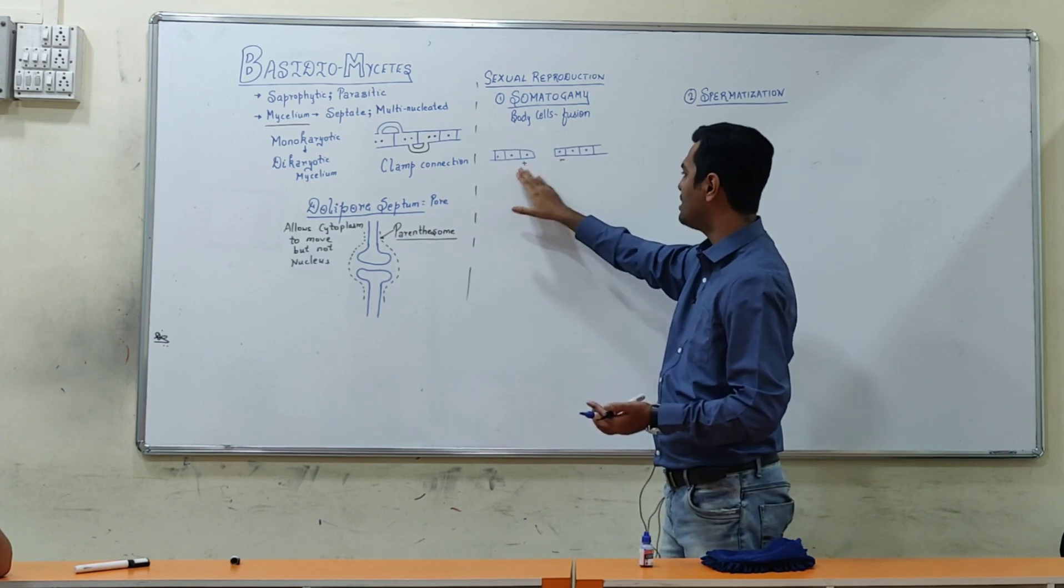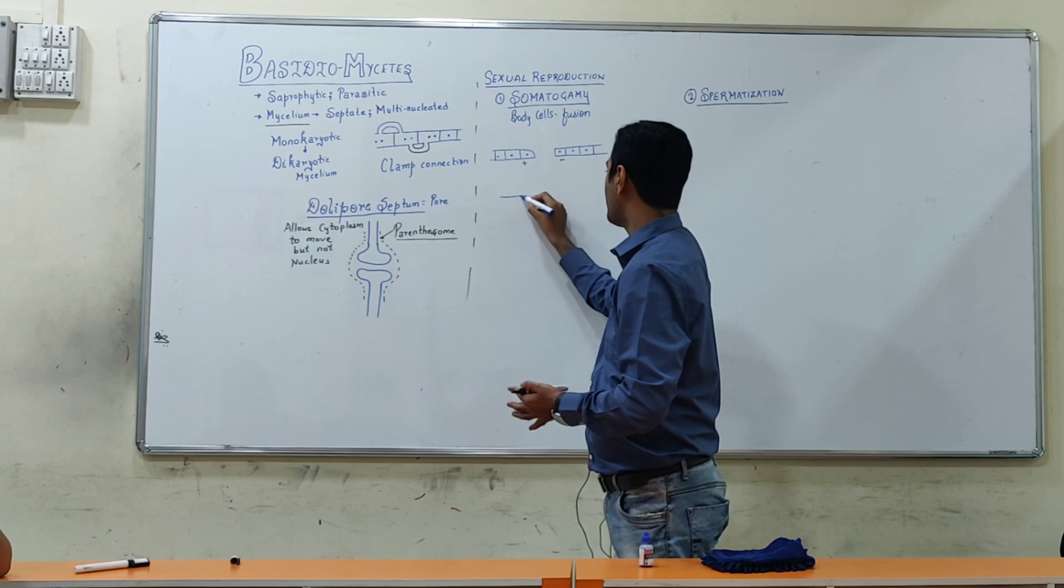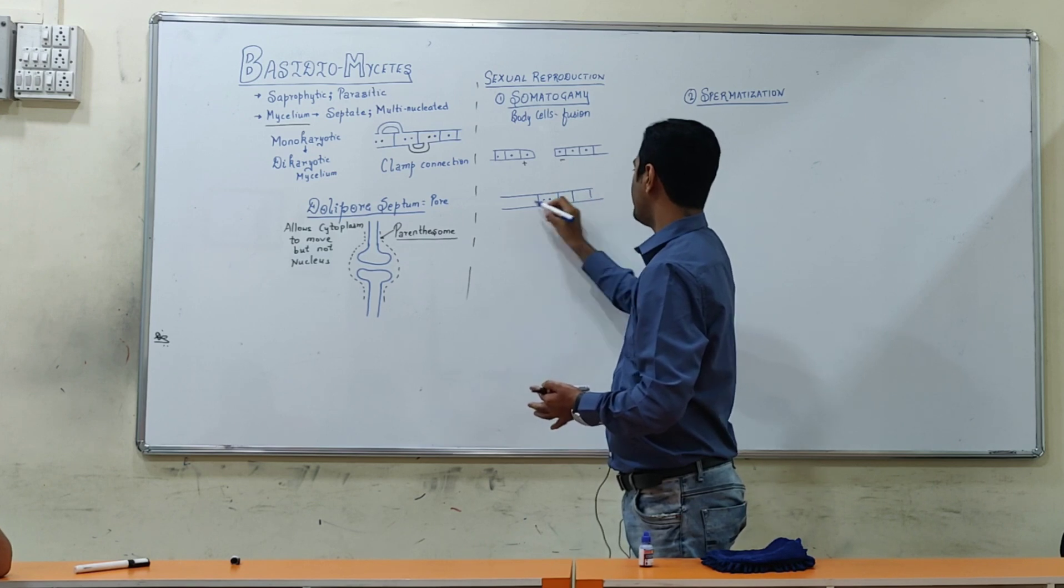Heterothallic it will be called. Plus from this sometimes we call this male or female, or one plus sign and one minus sign to symbolize which is male and female but as such no reproductive organ is forming like Phycomycetes gametangia. They will come close to each other and after coming close, in that such a stage will form.